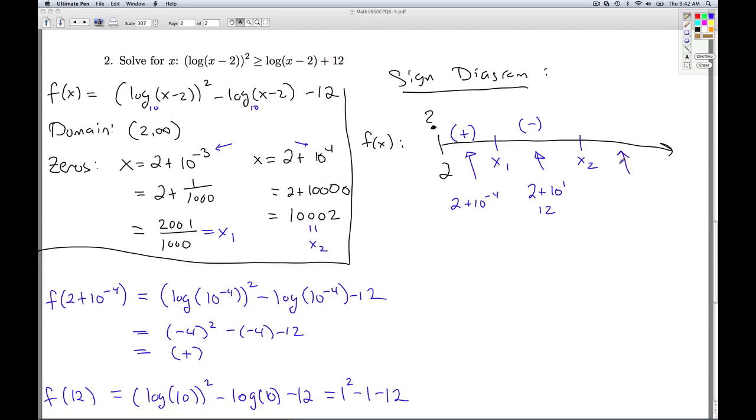Now I need to pick a number over here that's of the form two plus a power of ten. So two plus ten to the fourth, I can get bigger. Two plus ten to the fifth. So that's one hundred thousand two. I plug that into the function. If I plug two plus ten to the fifth in for x, when I subtract the two, I'm going to get log of ten to the fifth. And log of ten to the fifth is five. And so I get twenty-five minus five minus twelve, which is a positive number.